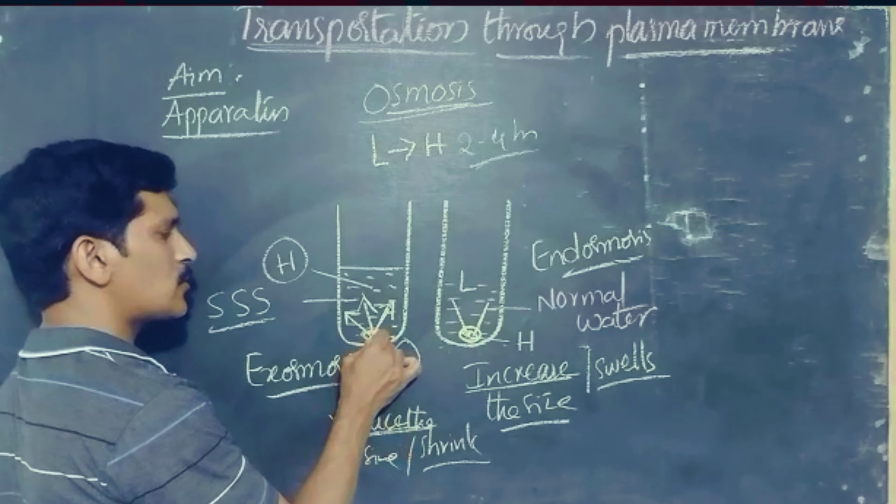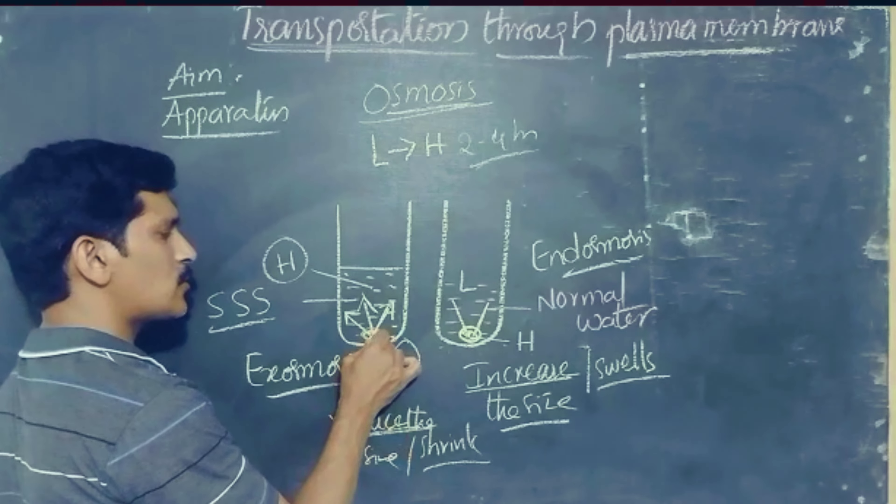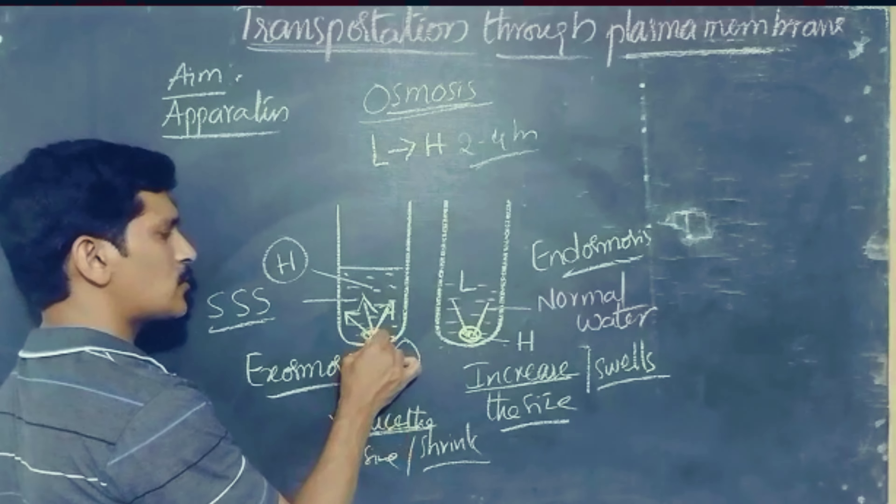In both situations, osmosis takes place, but the direction differs — in the first case from inside to outside, and in the second from outside to inside. In both cases, molecules move from lower concentration to higher concentration across the membrane. The outer layer of the dry grape acts like a plasma membrane, allowing materials to pass through. This simple experiment demonstrates how the plasma membrane allows materials inside and outside the body.